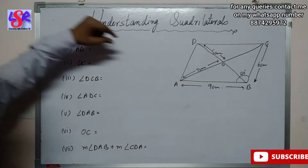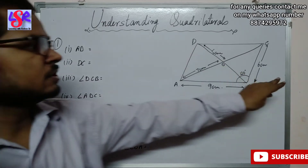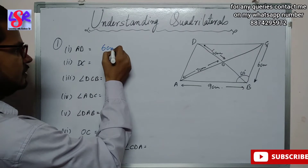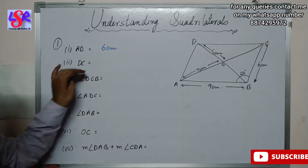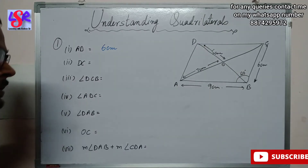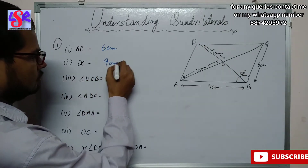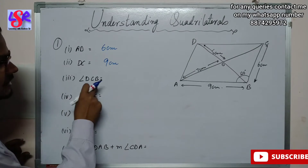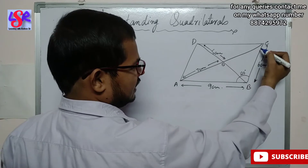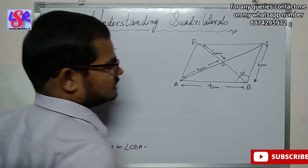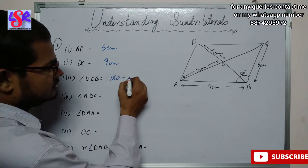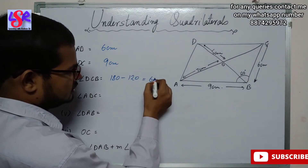We have to find AD. AD equals BC as opposite sides of a parallelogram, so AD is 6 centimeters. Then DC equals AB as opposite sides of a parallelogram, so DC is 9 centimeters. For angle DCB: adjacent angles of a parallelogram are supplementary, so angle DCB equals 180° minus 120°, which gives 60 degrees.